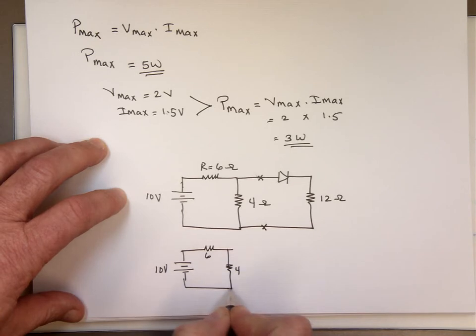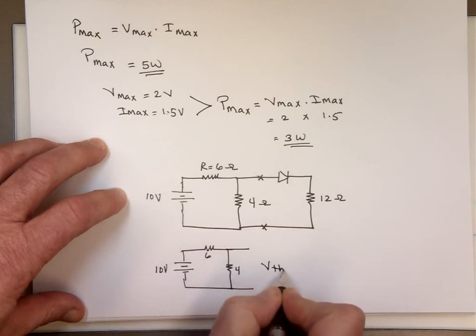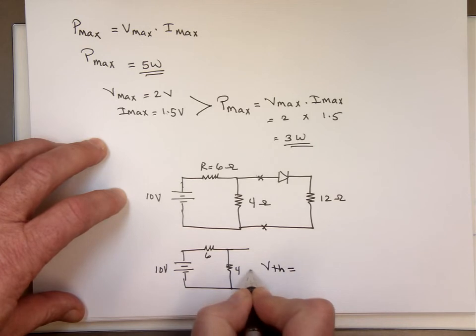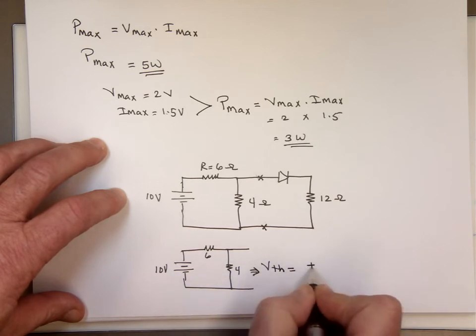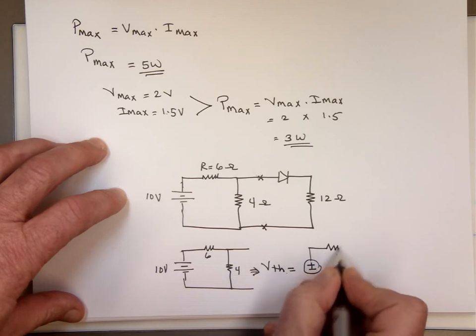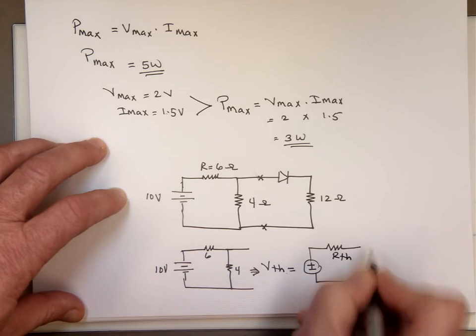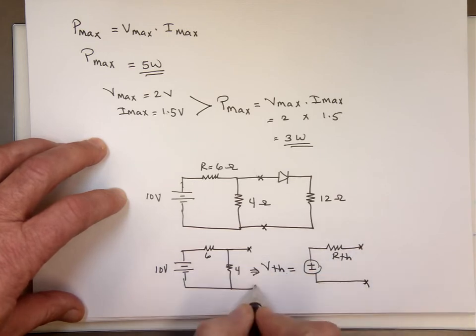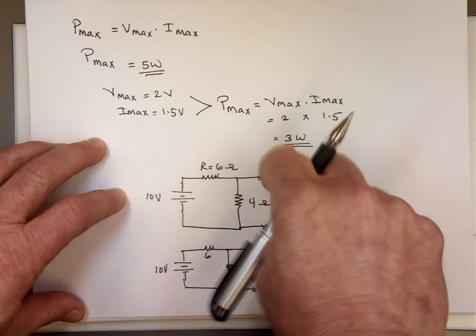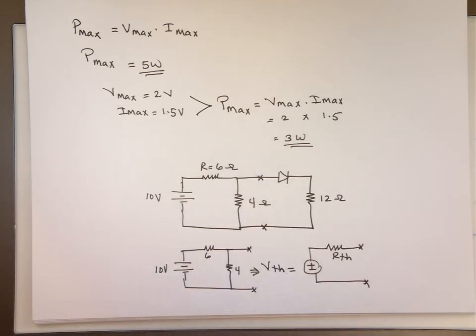So what I need to find is what is V thevenin here. Because the thevenin equivalent, we're going to take this circuit, replace it with the voltage source of V thevenin in series with the resistor called R thevenin. And if this value is positive, when you attach it here, you're going to be in the forward bias mode.